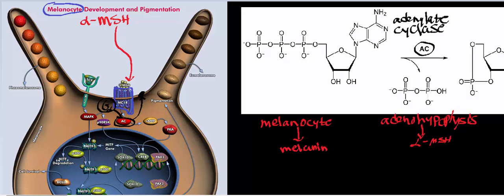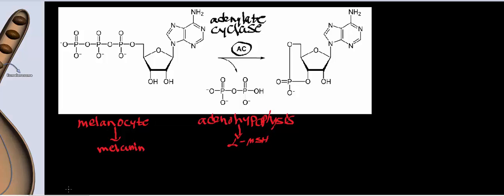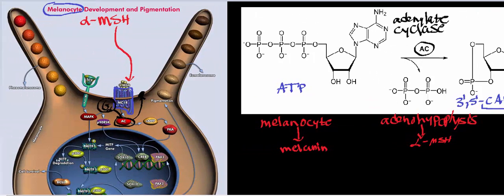This is the net reaction of adenylate cyclase. The substrate on the left is called adenosine triphosphate. ATP gets converted into cyclic adenosine monophosphate — or more specifically, 3'-5' cyclic AMP. Whenever adenylate cyclase becomes activated, you get an increase in the concentration of cyclic AMP, which means an increase in intracellular cyclic AMP.